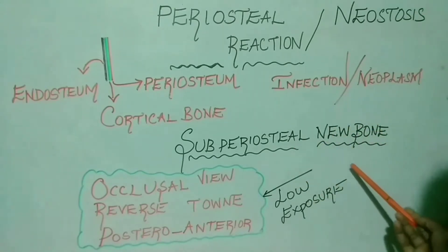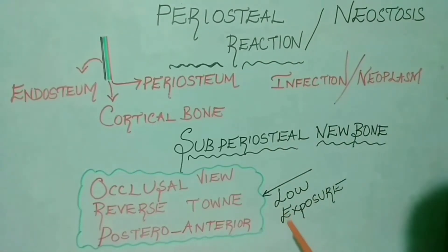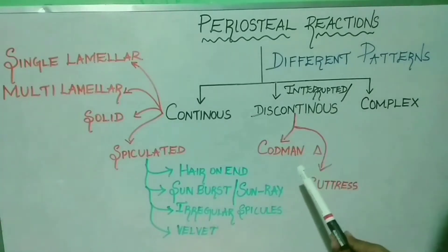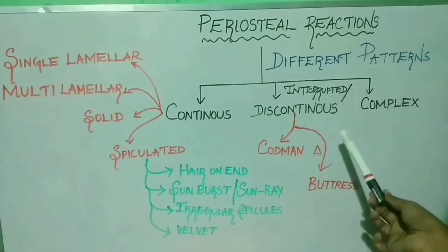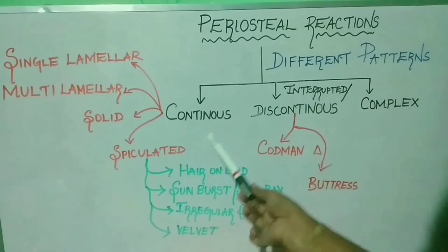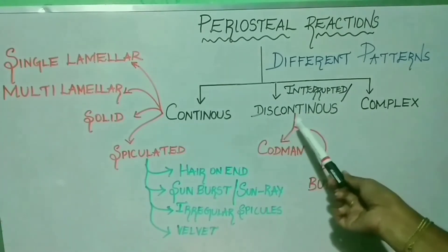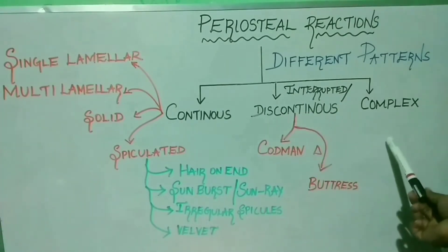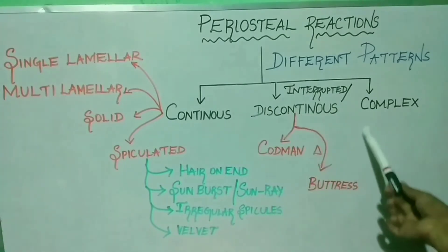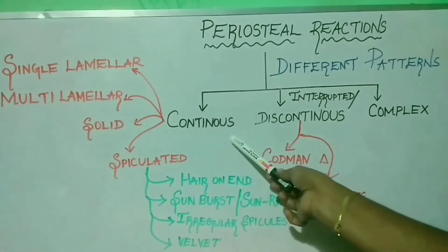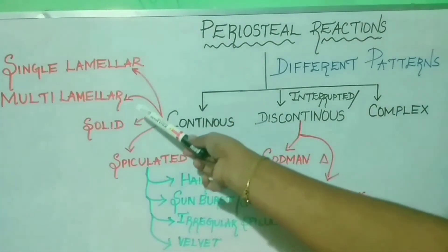This subperiosteal new bone can be deposited in different patterns. These periosteal reactions can be well appreciated on low exposure occlusal views and posteroanterior views. The periosteum can deposit bone in a continuous pattern, a discontinuous or interrupted pattern, or a combination of both, which is known as a complex pattern.